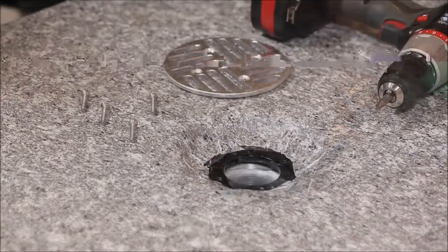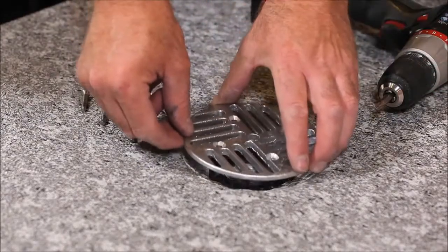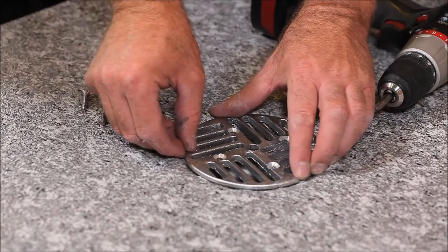Finally, reattach the clamping ring on the drain as a backup to the welding to help prevent leakage.